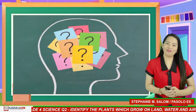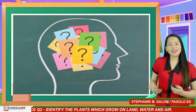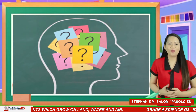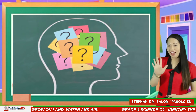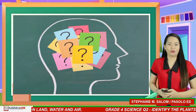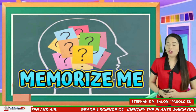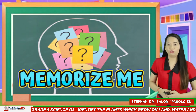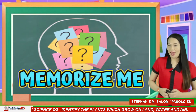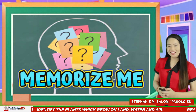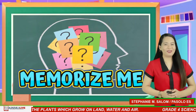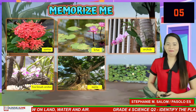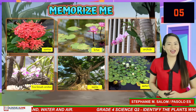Let's now have an activity called Memorize Me. I will be showing you pictures of plants that live on land, water, and air. I will give you 5 seconds to memorize the pictures. After that, I will cover each picture and you will identify the corresponding letter of the pictures based on what is being asked. Use the chat box to type your answer. Are you ready? Let's begin. Here are the pictures — I will give you 5 seconds to memorize them.